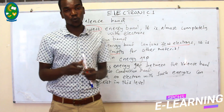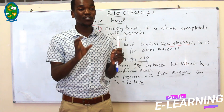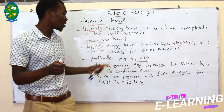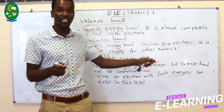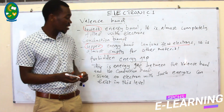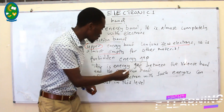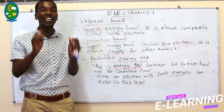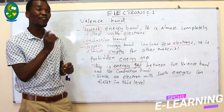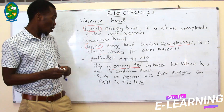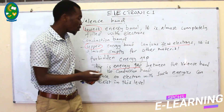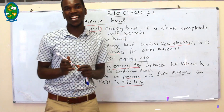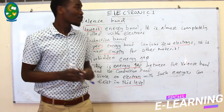The band between these two — the conduction band and the valence band — is what is known as the forbidden energy gap. It is known as the forbidden energy gap because it is just a gap. No electrons with any energy can be found in this energy gap, and we say no electrons can exist in this level with any energy.